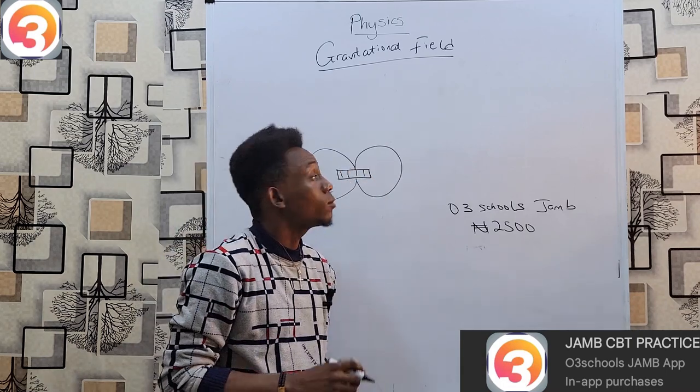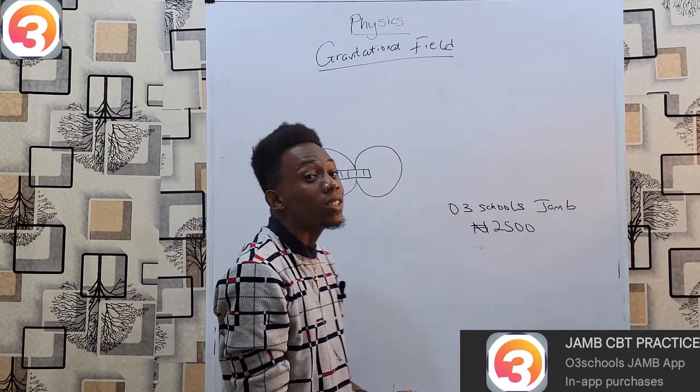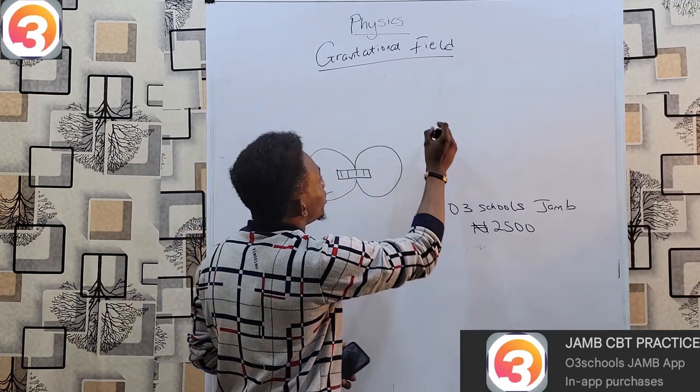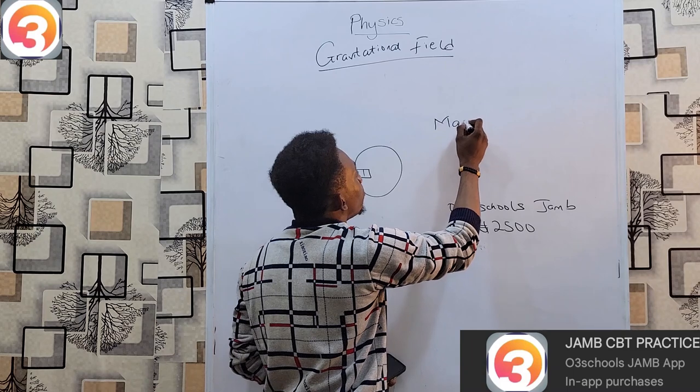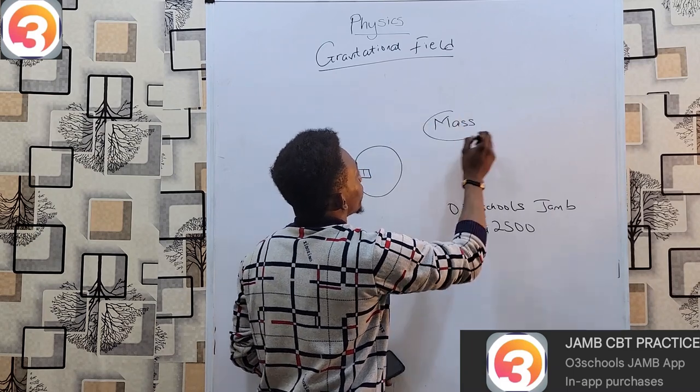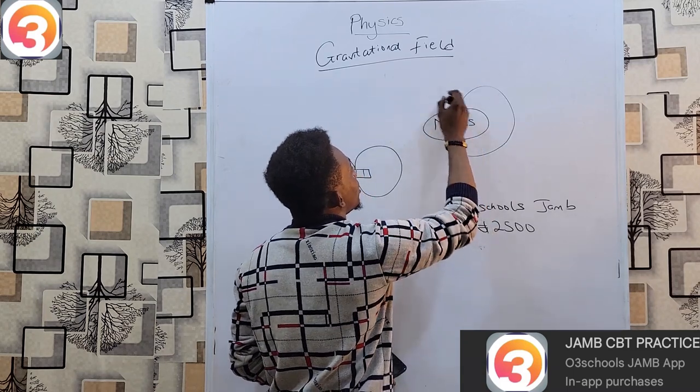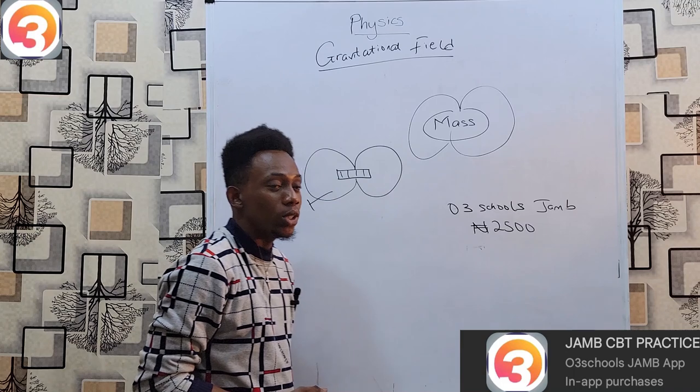This field describes the area around that object where we can feel the effect of the magnet. Gravitational field however has nothing to do with magnetism. Gravitational field is a function of mass, so it's the region around every mass where this mass can attract other objects.